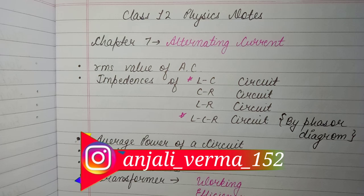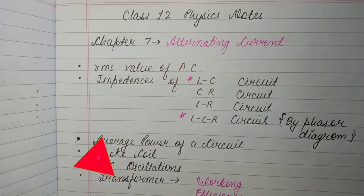So the important topics I have written here. First of all, the RMS value of alternating current. How do we derive it? Or in this way, we can ask the RMS value and the peak value of current.